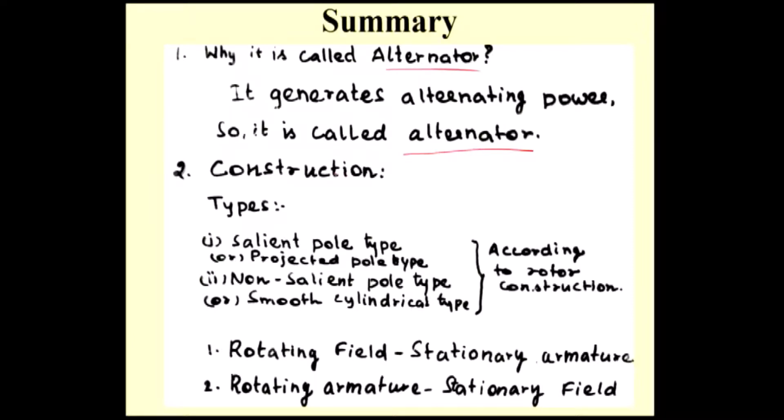The other name for alternator is synchronized generator. There are two types of alternator according to construction: rotating field stationary armature and rotating armature stationary field. Out of these two, rotating field stationary armature is best.